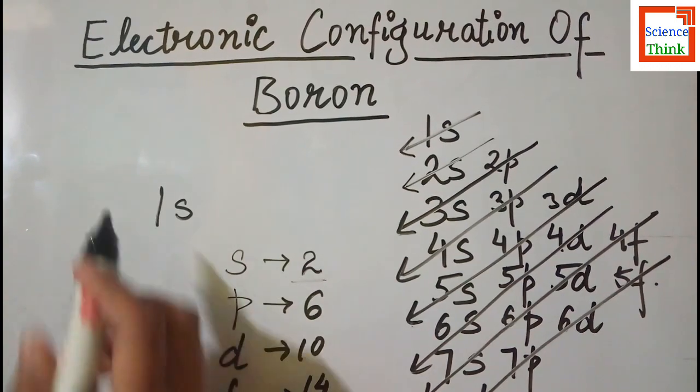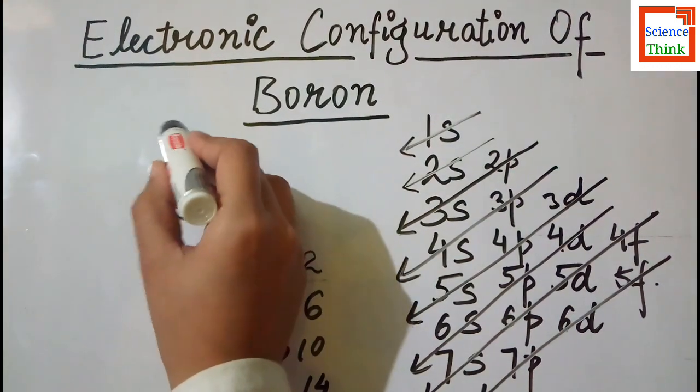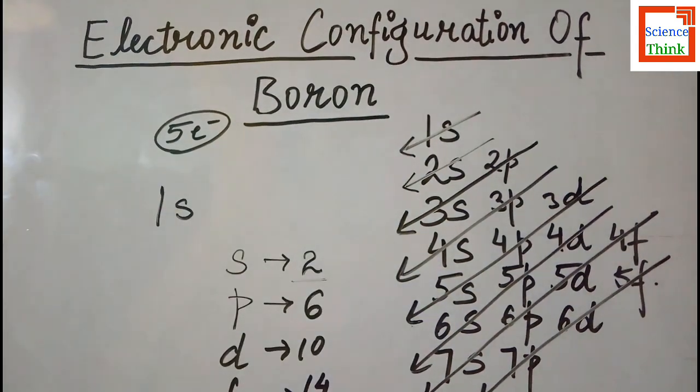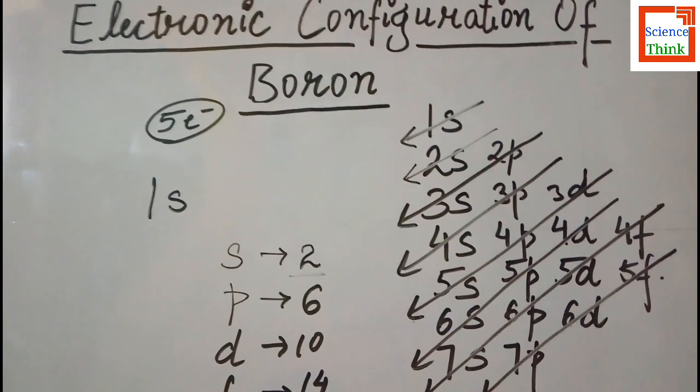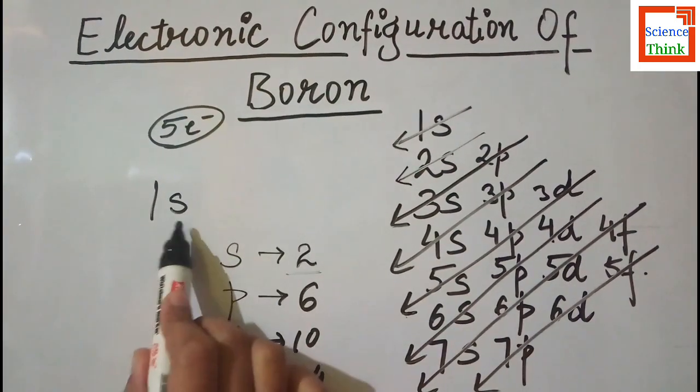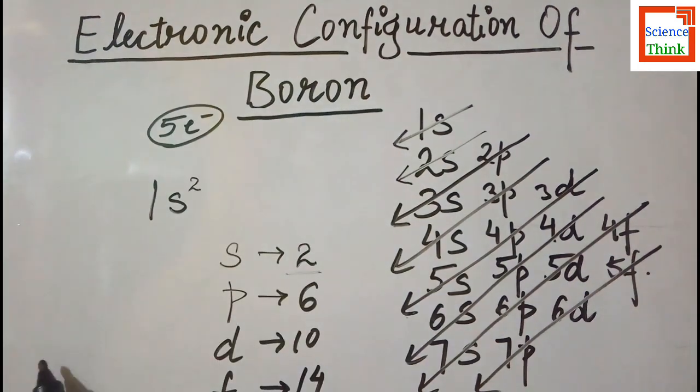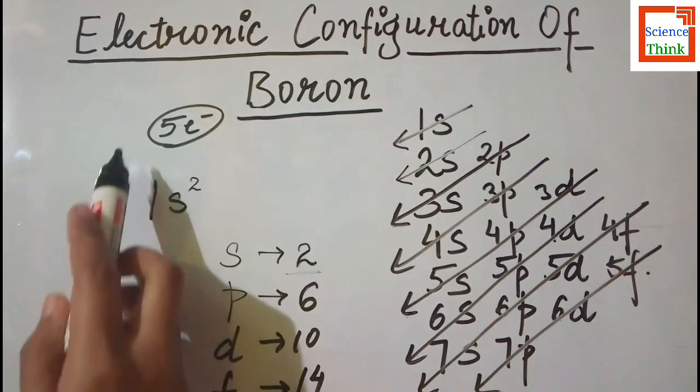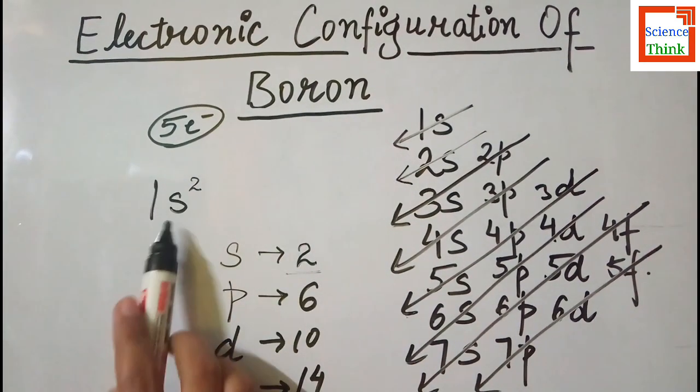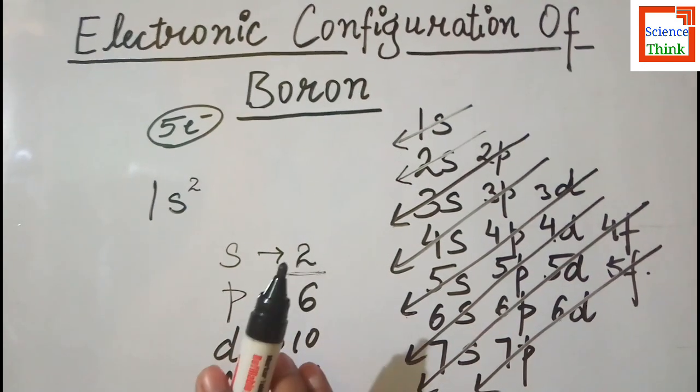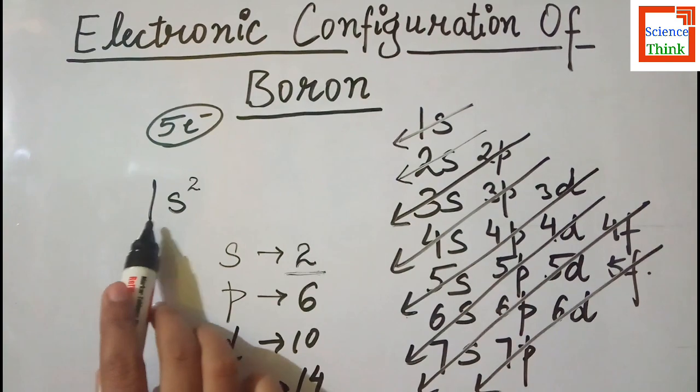So we know s orbitals can only accommodate 2 electrons. So firstly I am writing the total number of electrons that boron contains, that is 5 electrons, because its atomic number is 5. So in 1s we will write 1s², because out of 5 electrons, 1s can only accommodate 2 electrons, not more than 2.